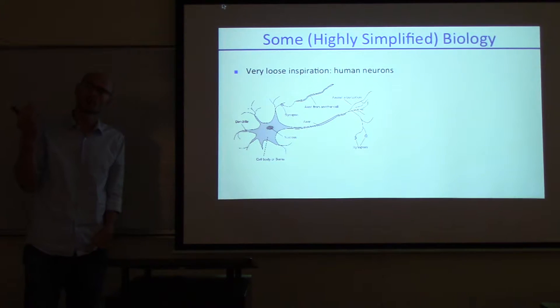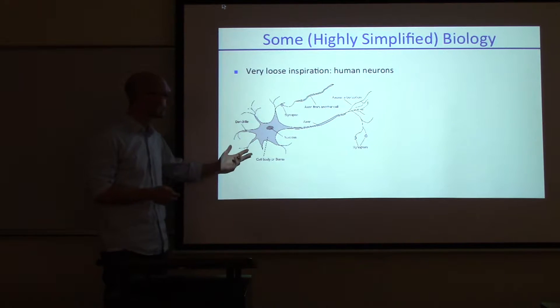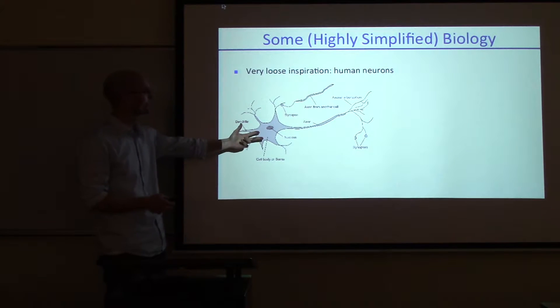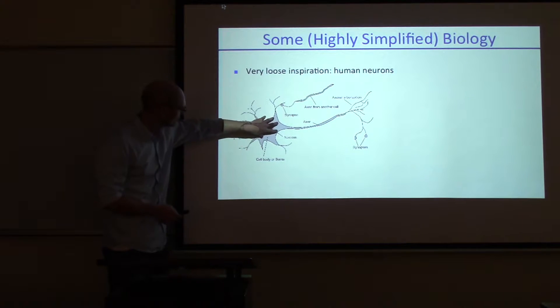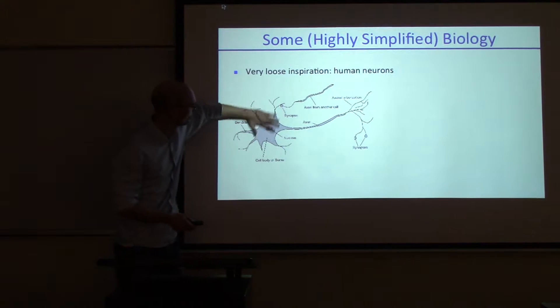I take this very loosely because nobody knows how the brain works, but it's inspired by what people think the brain might be like. The brain consists of a lot of neurons. A single neuron is visualized here. There is a center part, and then there are dendrites on one side and axons on the other side.